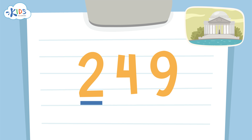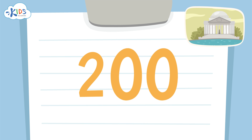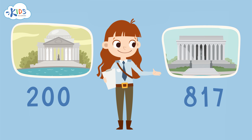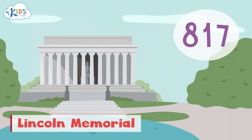We'll use the strategy of underlining the hundreds place and drawing an arrow to the tens place. I see a four in the tens place — if it's four or lower we have to round down. The two in the hundreds place is underlined, so we round down 249 to 200. When rounding to the hundreds place, the numbers in the tens and ones places become zeros. The Lincoln Memorial saw 817 visitors.